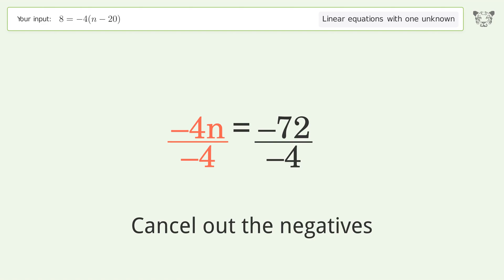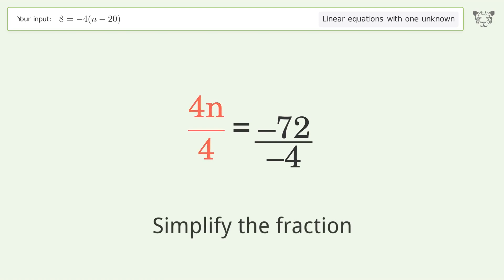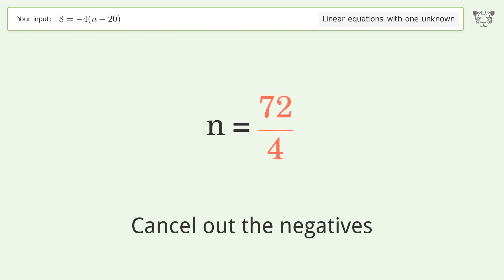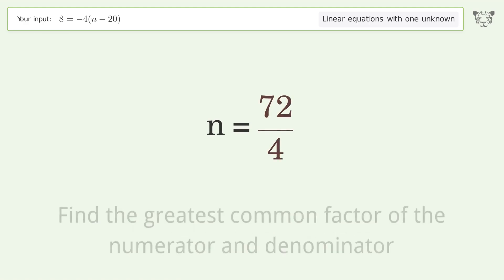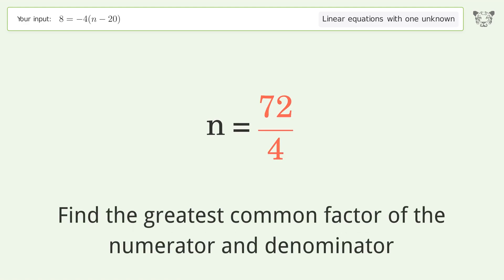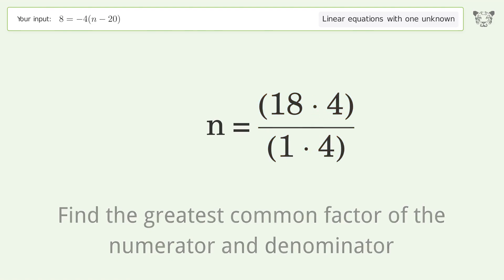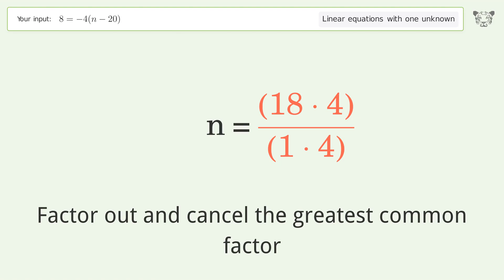Cancel out the negatives. Simplify the fraction. Cancel out the negatives again. Find the greatest common factor of the numerator and denominator. Factor out and cancel the greatest common factor.